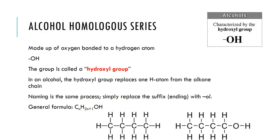We've already defined a homologous series as any hydrocarbon family that differs only by a CH₂. When we look at the alcohol homologous series, we're talking about compounds with just one alcohol group. If we put a second hydroxyl group on there, it would become a different homologous series, because we have two of the functional group rather than one — it differs by more than just a CH₂.